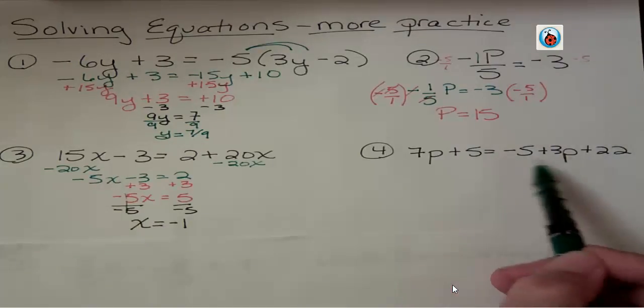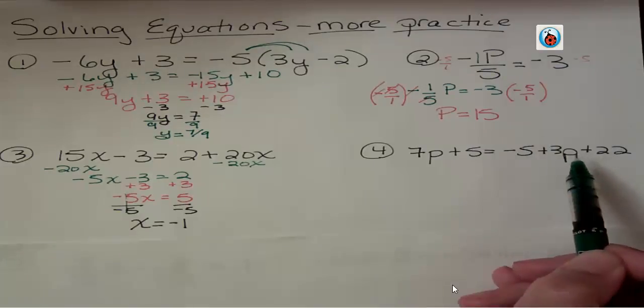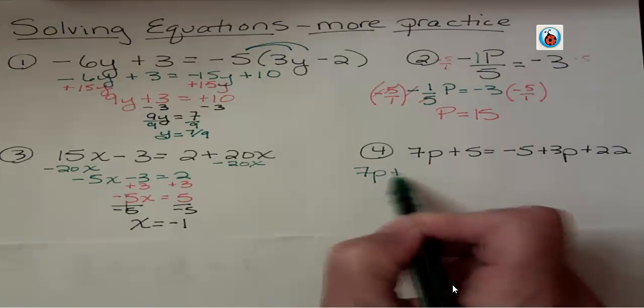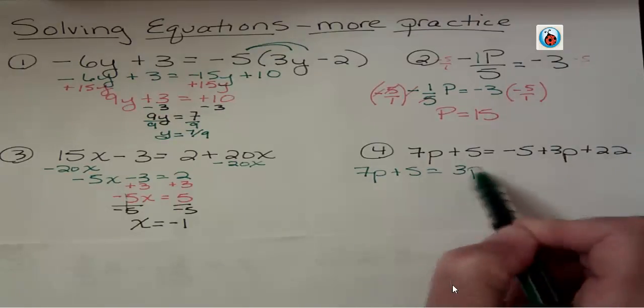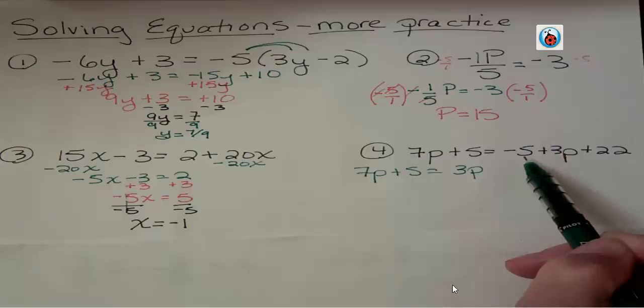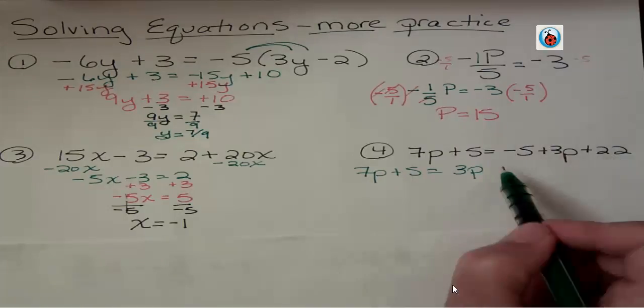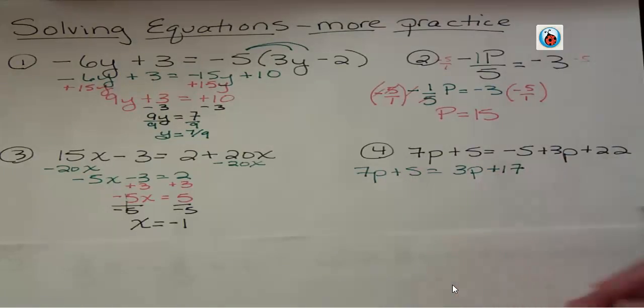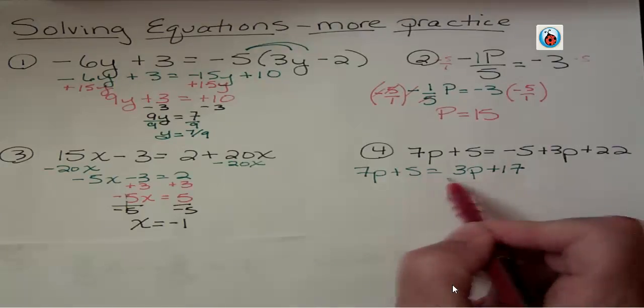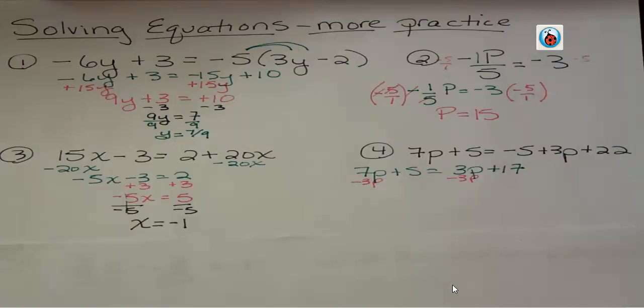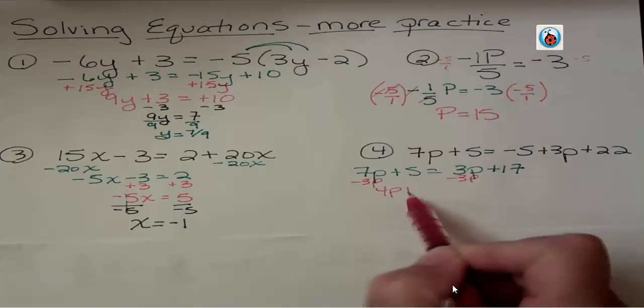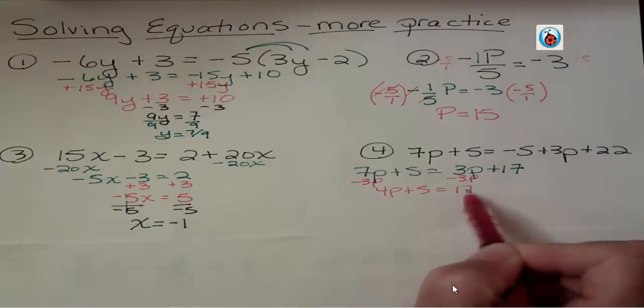Now here, I have something I need to simplify first. On the right, I'm going to add these two together. I'll put 3p first, but it doesn't matter which one you put first. Negative 5 and positive 22 is positive 17 because I have more positives than negatives. Now I'm ready to do just like the last one. Maybe you could pause it and try it on your own. Subtract 3p. Again, you could just subtract 7p and put the p's on the right. That gives you 4p.